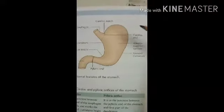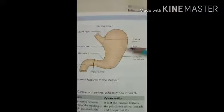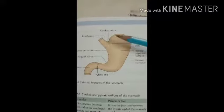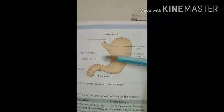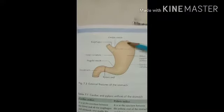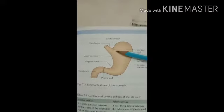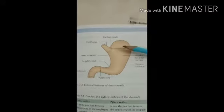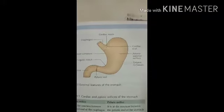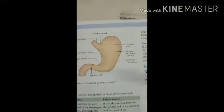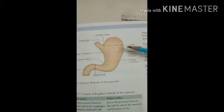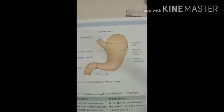The stomach, or Amashaya, is also called the gaster. It is a muscular bag and the most distensible part of the digestive tract. Superiorly it is connected with the esophagus and inferiorly with the duodenum. The main functions of the stomach are that it is the reservoir of food and helps in the digestion of carbohydrates, proteins, and fat. The stomach is obliquely positioned, as shown in the diagram.